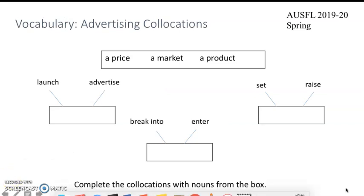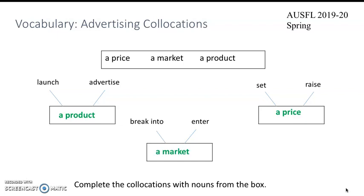Now we will start studying the third group of vocabulary: advertising collocations. You can find this group of words in your book in unit 5, page 59. Before we talk about their meanings, let's test ourselves. Pause your video and complete the collocations with nouns from the box. The first collocation group should be to launch a product or to advertise a product. The second group should be to set a price or to raise a price. And the last group should be to break into a market or to enter a market.